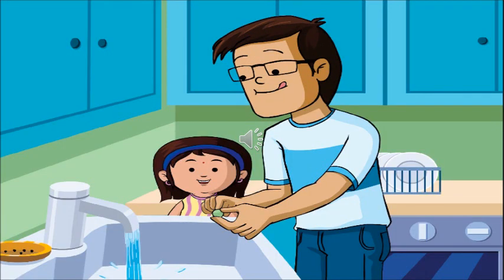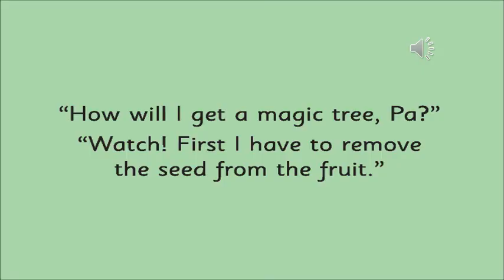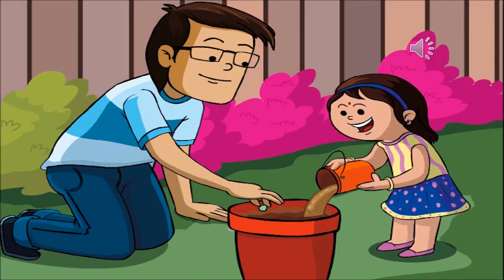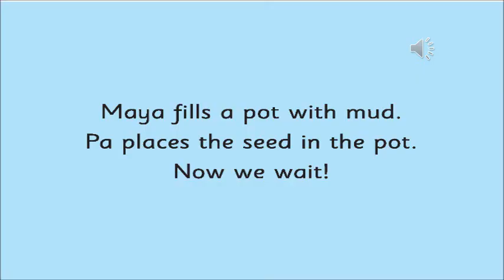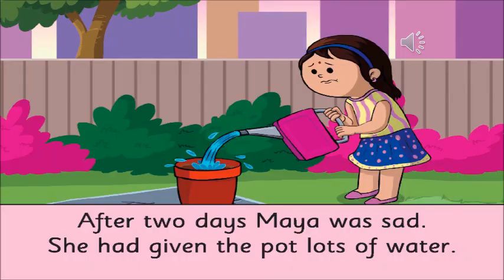So why is Maya's father removing the seeds? With the help of the seeds, a plant will grow and they can plant a new tree. That is why Maya's father is removing the seeds. Why is Maya filling a pot with mud? Maya is filling the pot with mud, and the seed needs to be put in the mud because it will help it to grow — for a seed to become a plant, we need soil. She is also pouring some water, which will help the plant to grow.